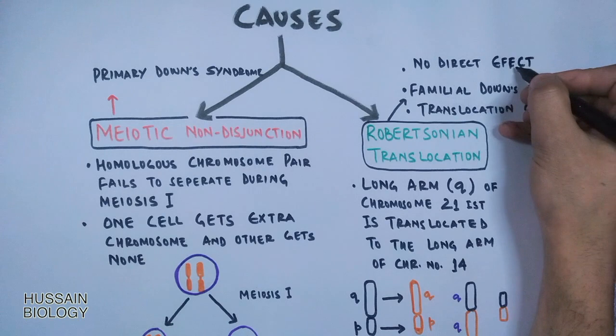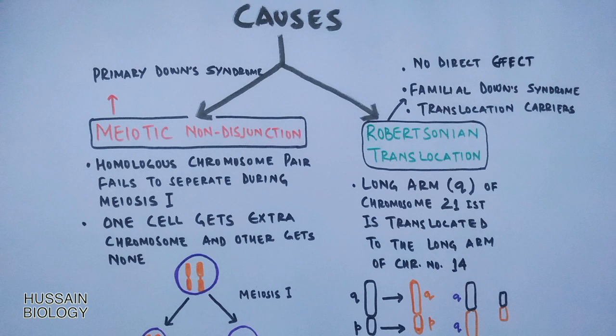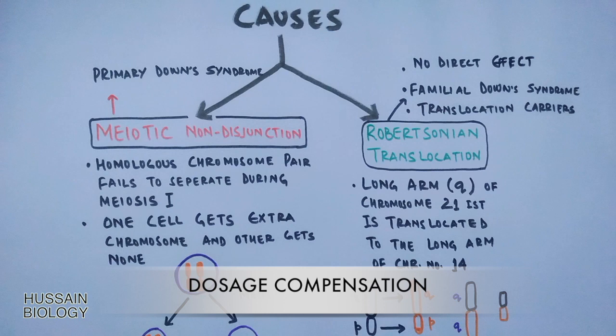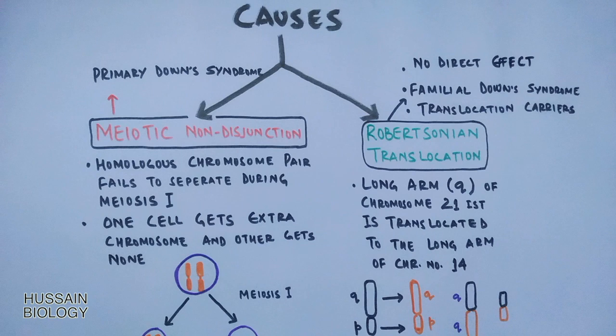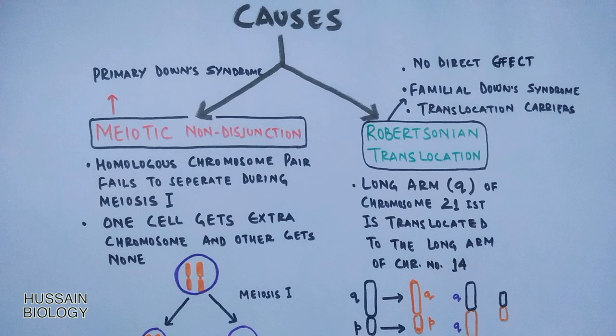You might be wondering why meiotic non-disjunction causes Down syndrome while Robertsonian translocation only acts as a carrier. It all depends upon the dosage compensation of gene expression. When there is an extra chromosome in the cell, there is overexpression of genes and dosage compensation is disrupted. In non-disjunction, we directly get an extra chromosome, so dosage compensation is disrupted and Down syndrome results. In Robertsonian translocation, only the q arm translocates between chromosomes 21 and 14 and does not disrupt dosage compensation, so it only acts as a translocation carrier. All monosomies or trisomies occur due to disruption of dosage compensation of gene expression.